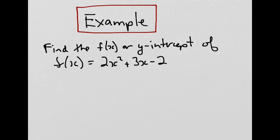Here we're asked to find the f(x) or y-intercept of f(x) = 2x² + 3x - 2. Recall from above that x is always equal to 0 for an f(x) or y-intercept. So we simply substitute the 0 in for x.